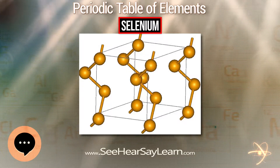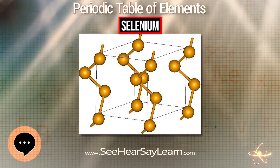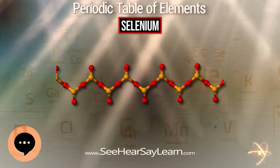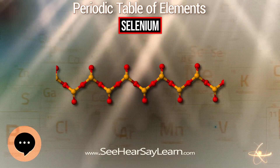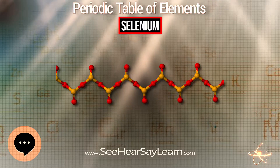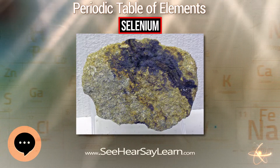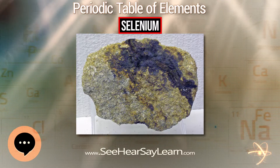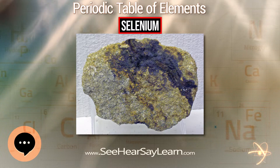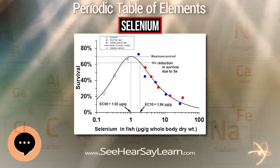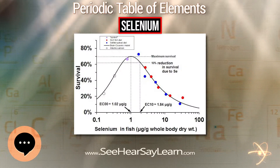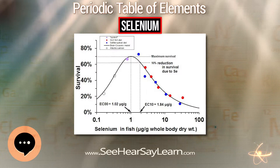Selenium has seven natural isotopes, including 79Se which occurs in minute quantities in uranium ores, as well as 23 other synthetic isotopes. Selenium compounds commonly exist in the oxidation states −2, +2, +4, and +6.